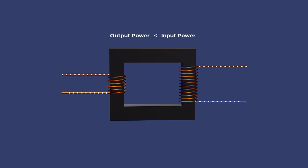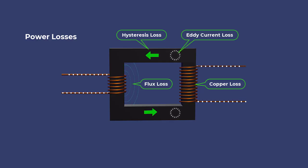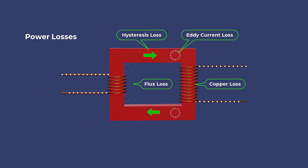The output power is always slightly less than the input power. Real transformers have power losses, including copper loss, hysteresis loss, flux loss, and eddy current loss, which end up as heat that must be removed from the transformer.